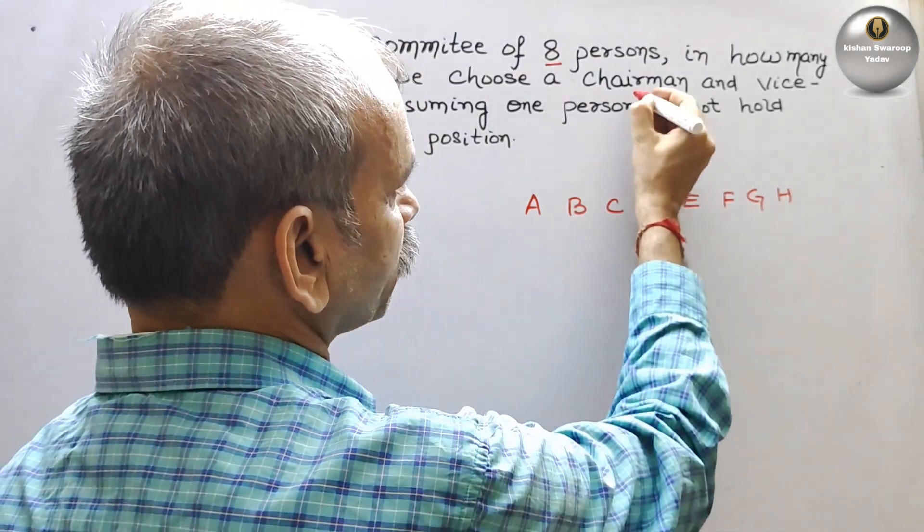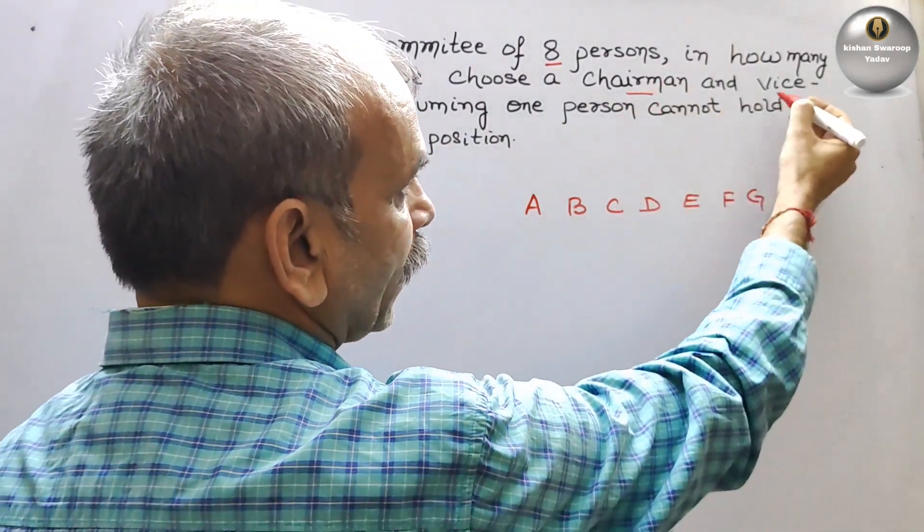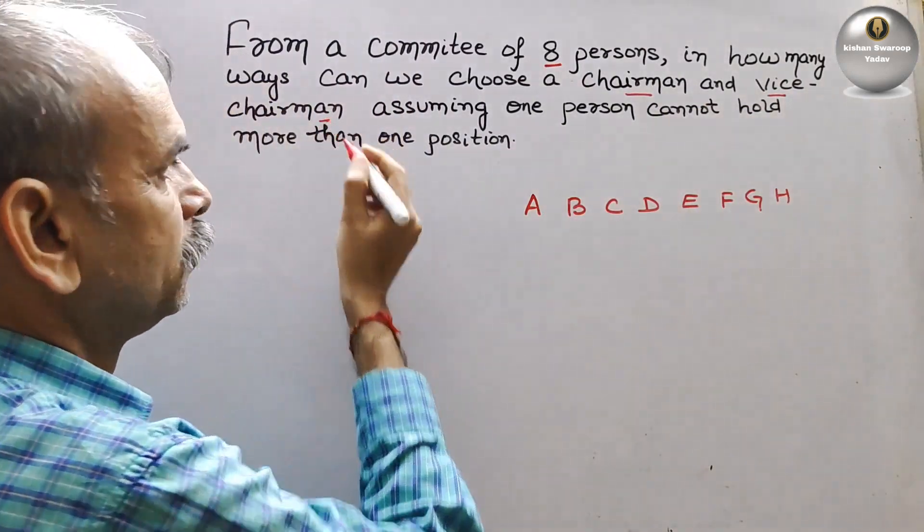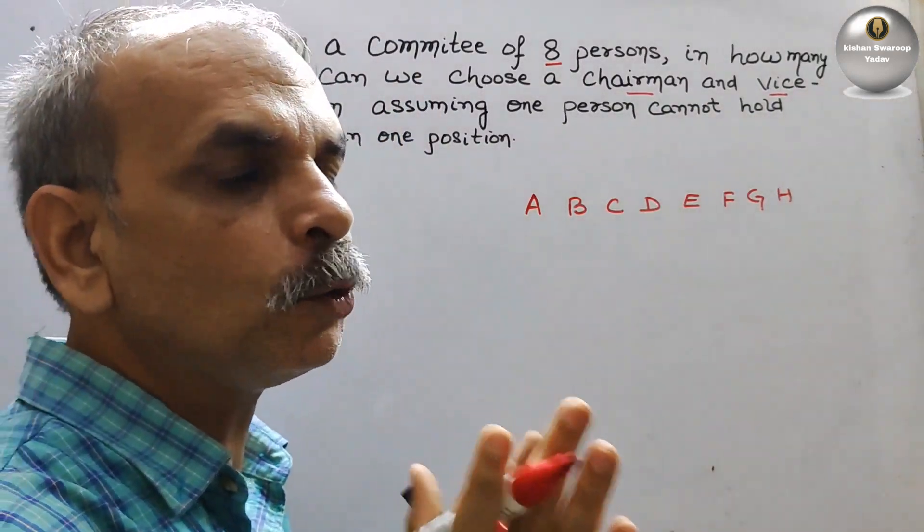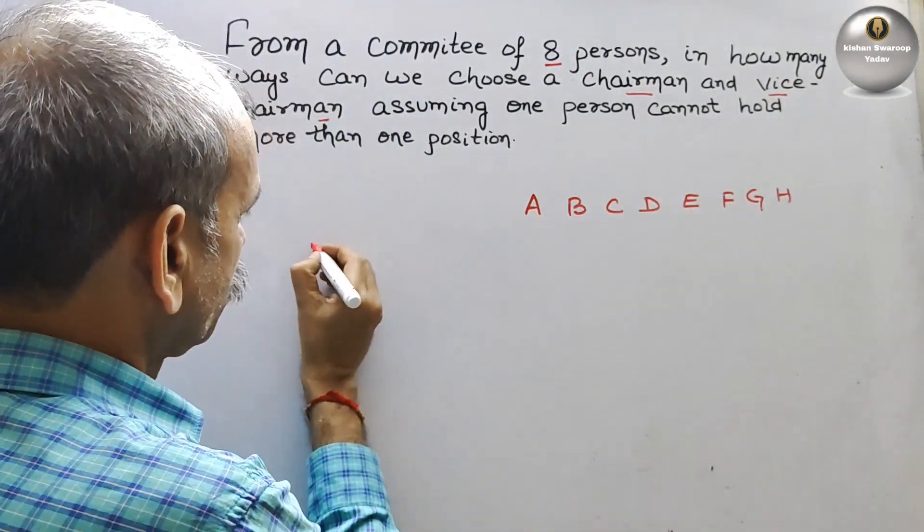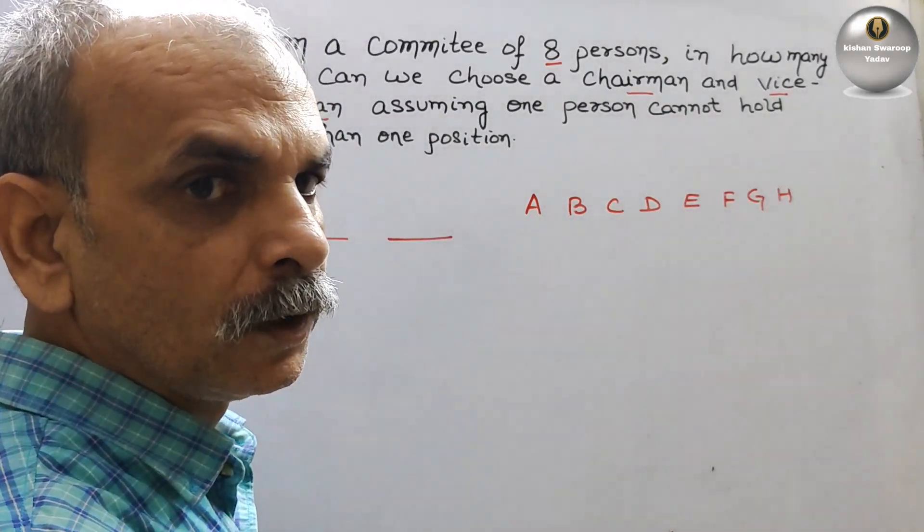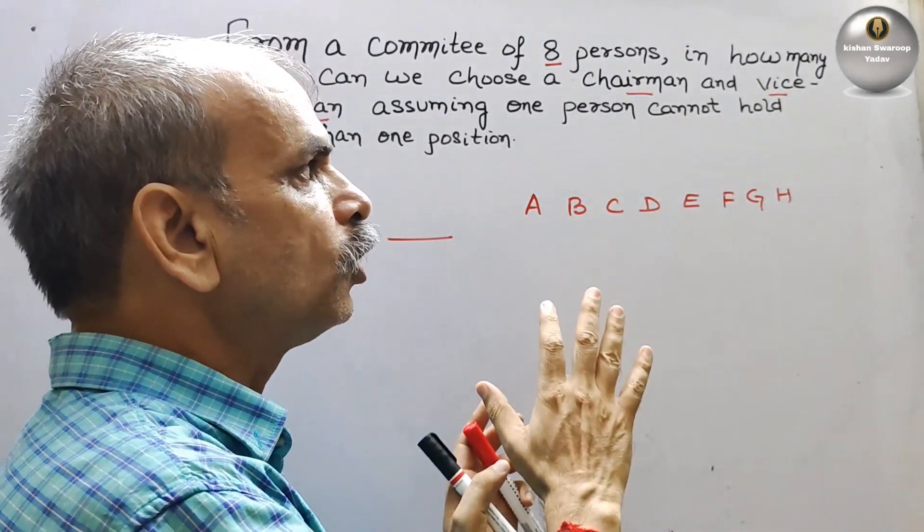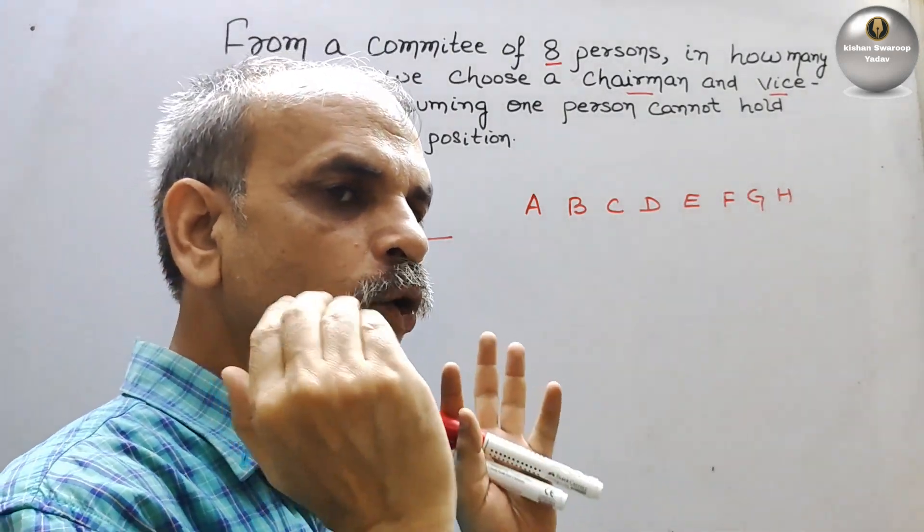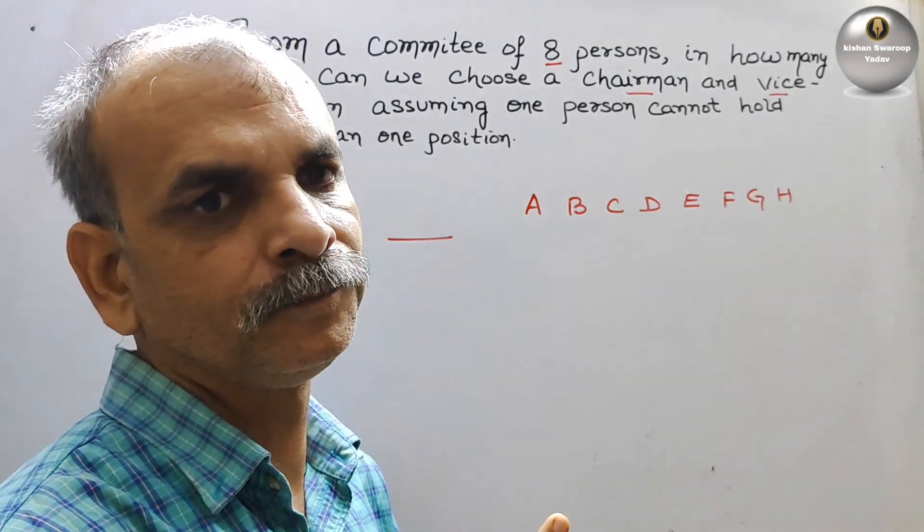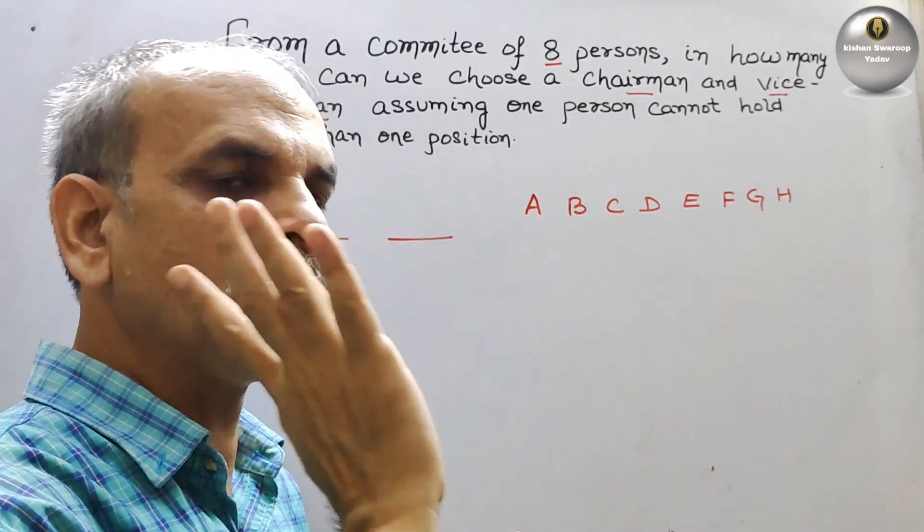That is nothing but your chairman is one and another is vice chairman. So that means there are two blank seats, first and second. Now if you see they have told one person cannot hold another. One person can hold only one position.